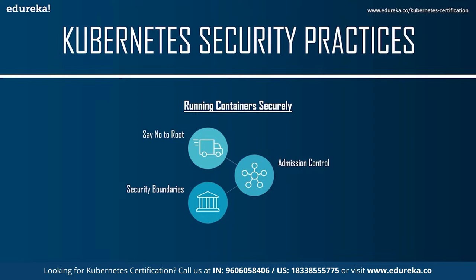Security boundaries define a set of controls to prevent processes from affecting other processes or accessing data from other users. From the most outer to the most inner layers of isolation, these boundaries are: cluster, node, namespace, pod, and container. Maximizing defense requires a joint effort by developers and cluster or namespace admins. Kubernetes offers two pod-level security policy mechanisms to restrict what processes can do within a pod and how pods are allowed to communicate: security context and pod security policies. A security context defines privilege and access control settings at either the pod or container level.